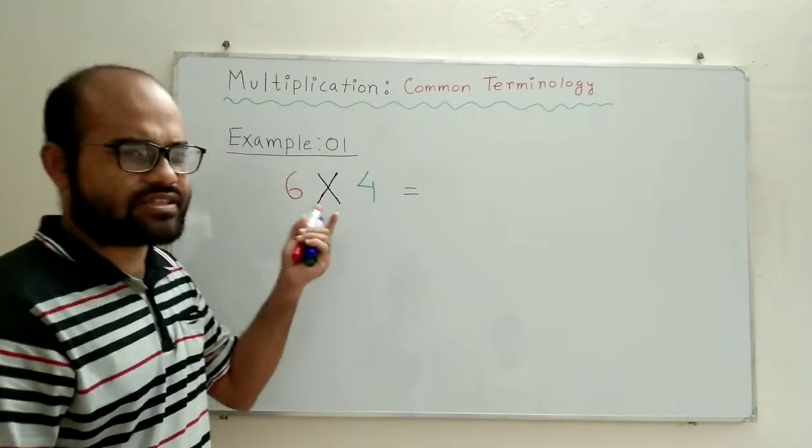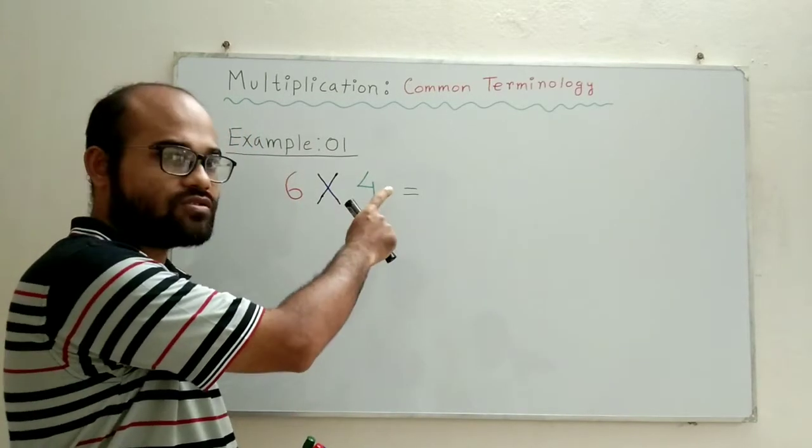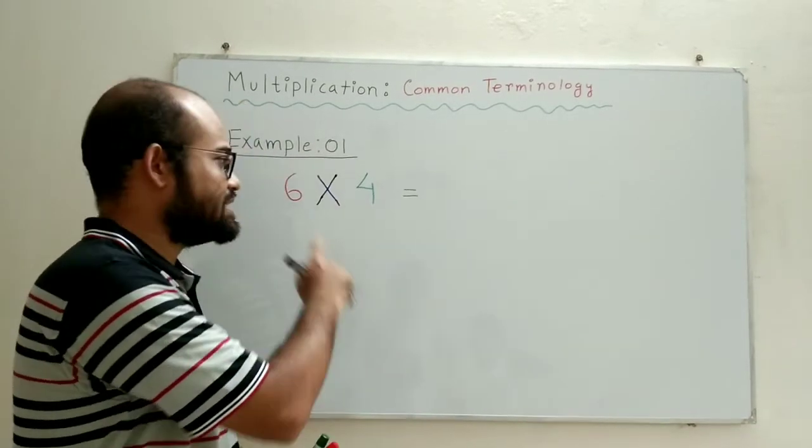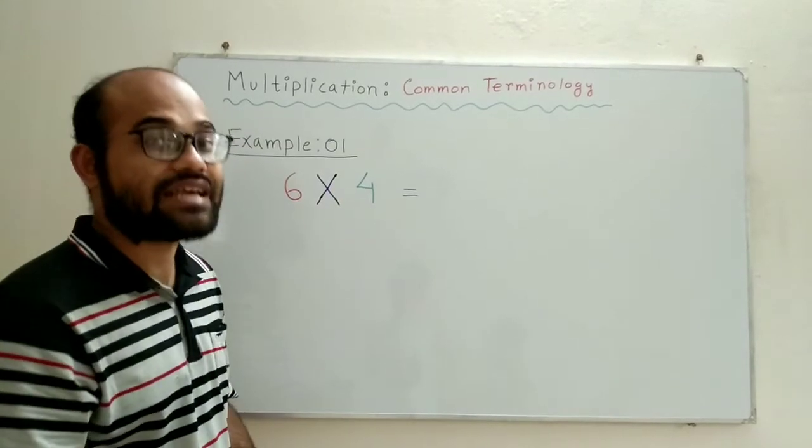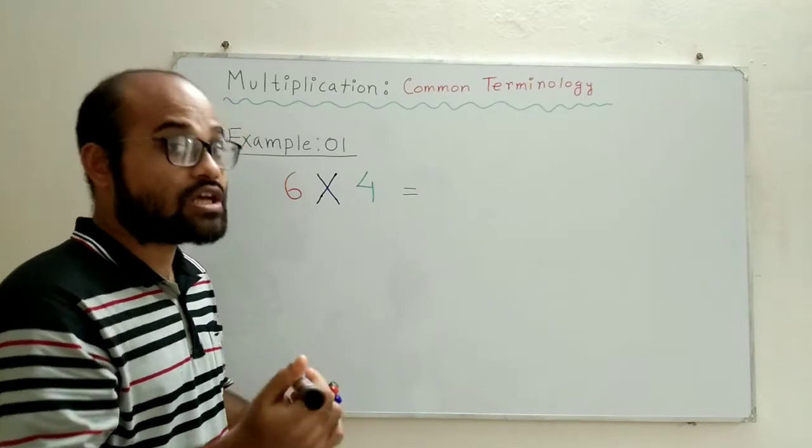So let us start reading the table of 6. 6 times 1 equals 6. 6 times 2 gives us 12. 6 times 3 gives us 18. And finally 6 times 4 gives us 24.